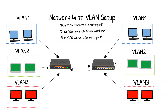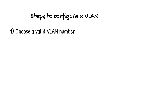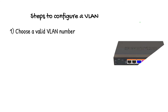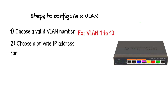Steps to set up a VLAN: First, choose a valid VLAN number. Second, choose a private IP address range for devices on that VLAN to use. Third, configure the switch device with either static or dynamic settings.